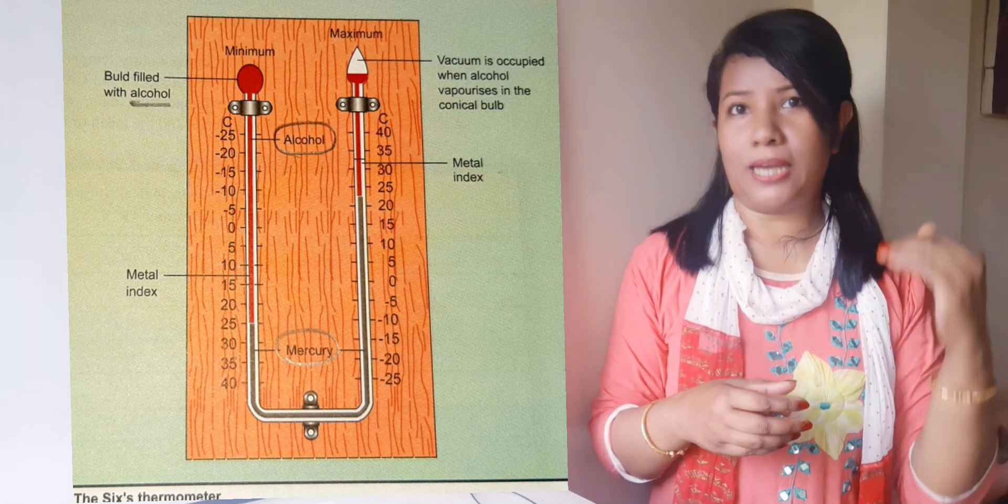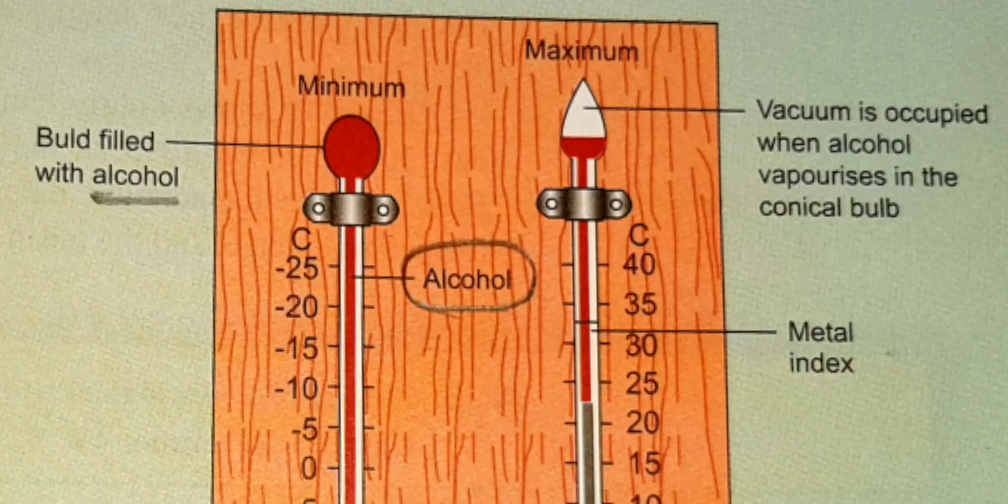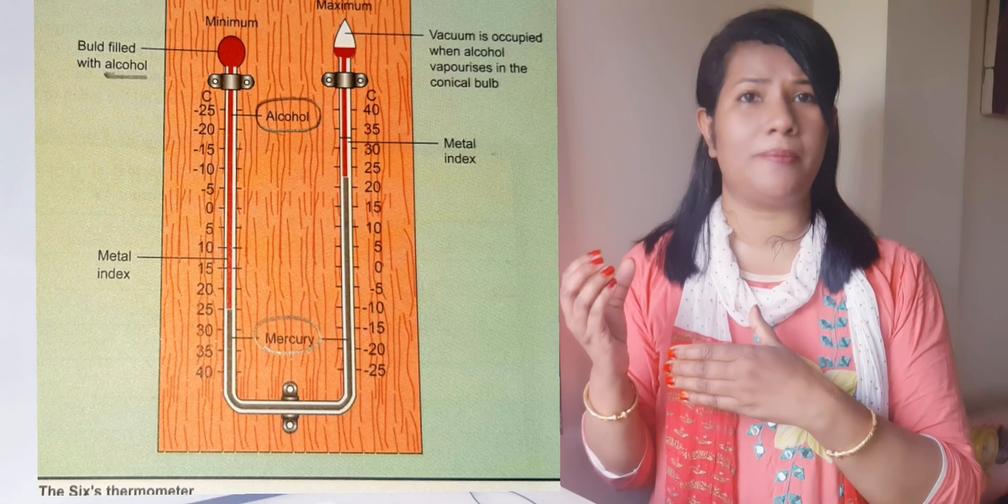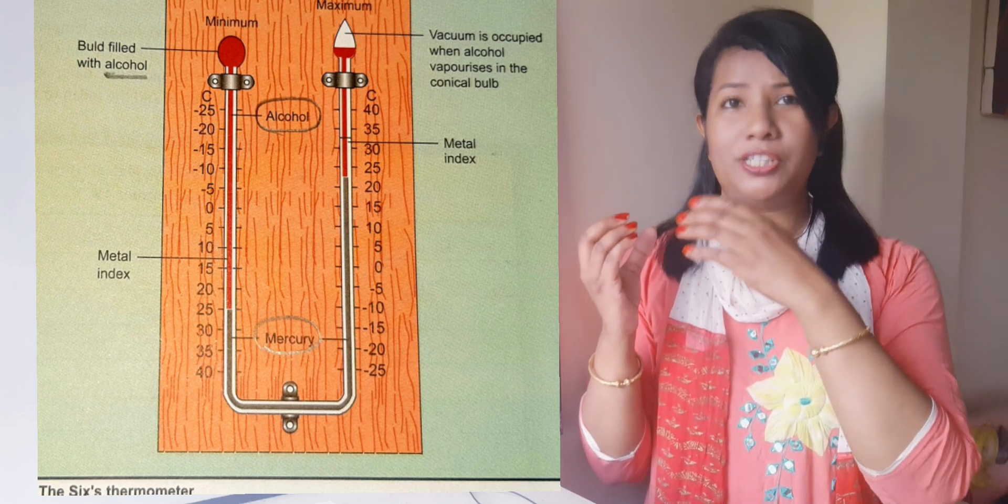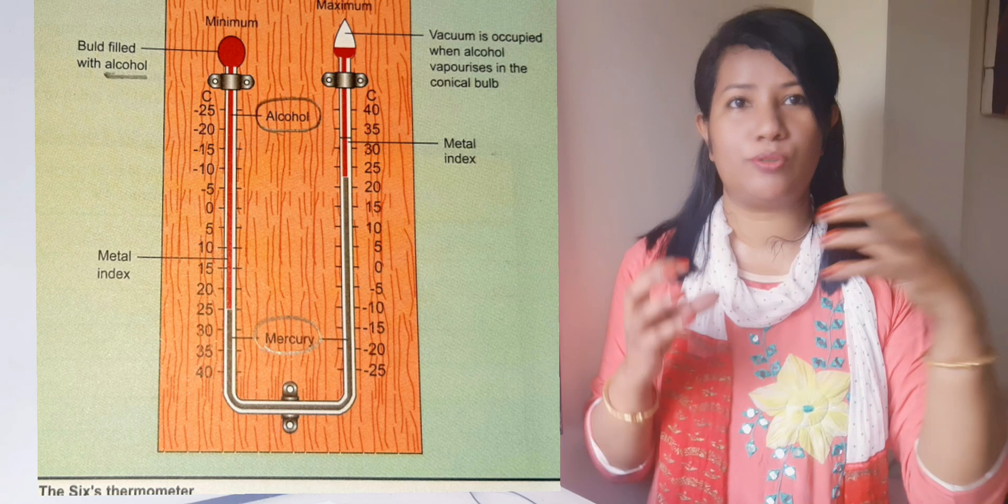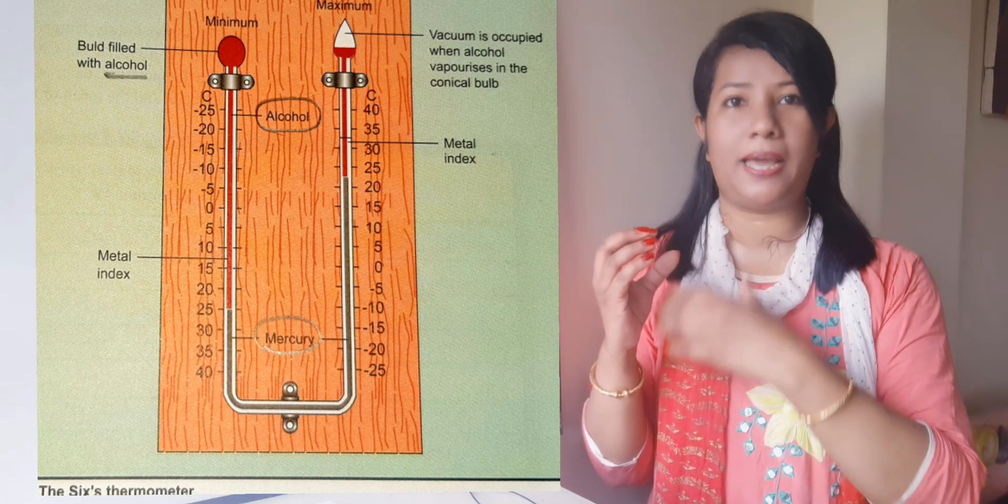So when the temperature rises, what happens? Both the liquids expand. When it expands, alcohol in the left arm then pushes the mercury down the left arm and up the right arm. So the alcohol in the right arm expands and vaporizes to occupy the vacuum space in the conical valve.